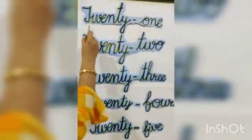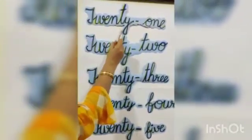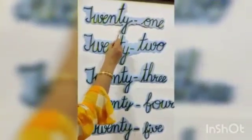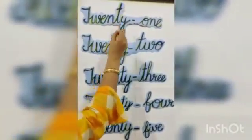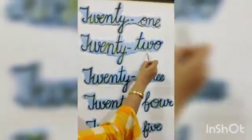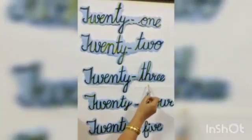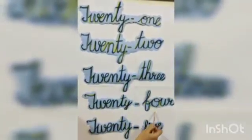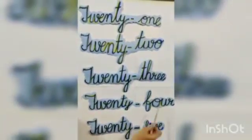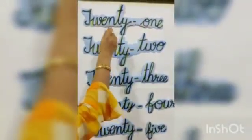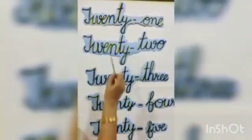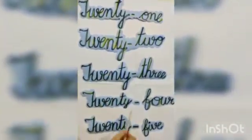You know the spellings of 20. You also know the spellings of 1, 2, 3, 4, 5. So it is very easy to learn from 21 to 25. Let's start.